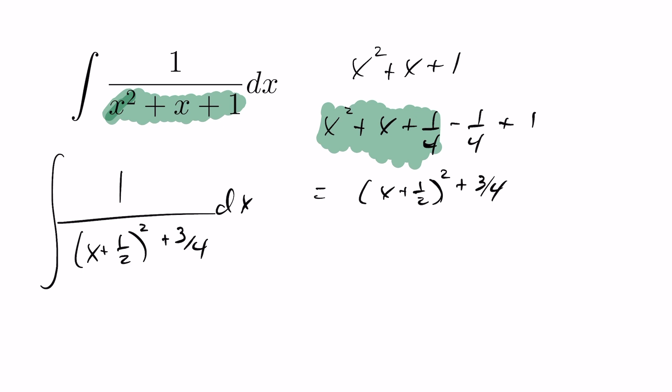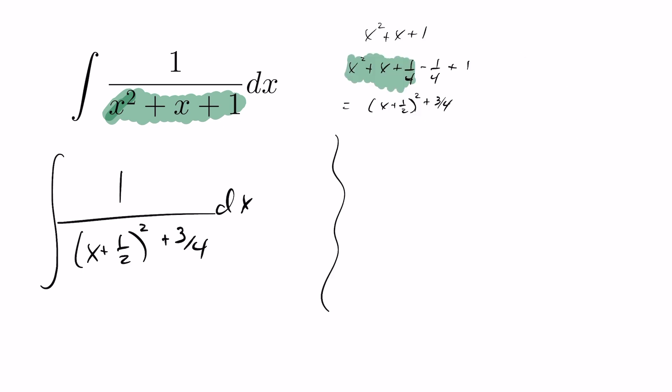Now, the reason I'm doing that is because the integral of 1 over u squared plus 1 with respect to u, I know that's equal to tan inverse of u. So I sort of have this form here now that I've completed the square. I'm going to start off with a substitution. I'm going to let u equal x plus 1 half, in which case du is going to equal dx.